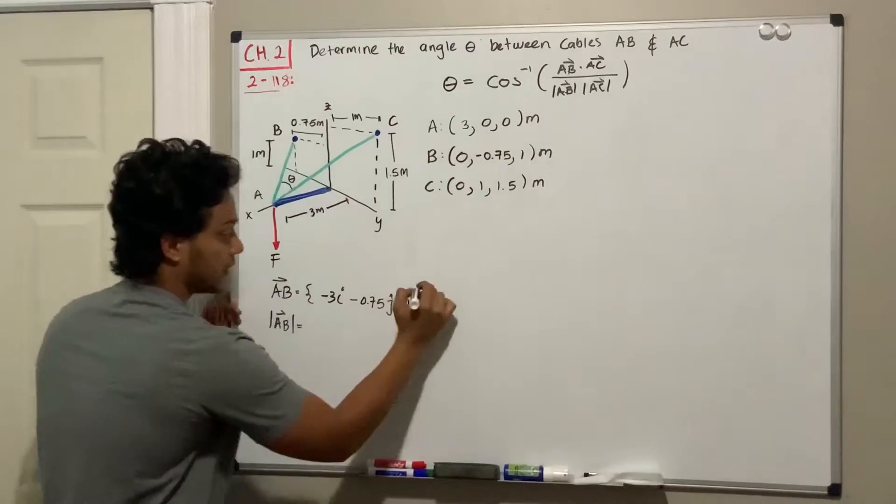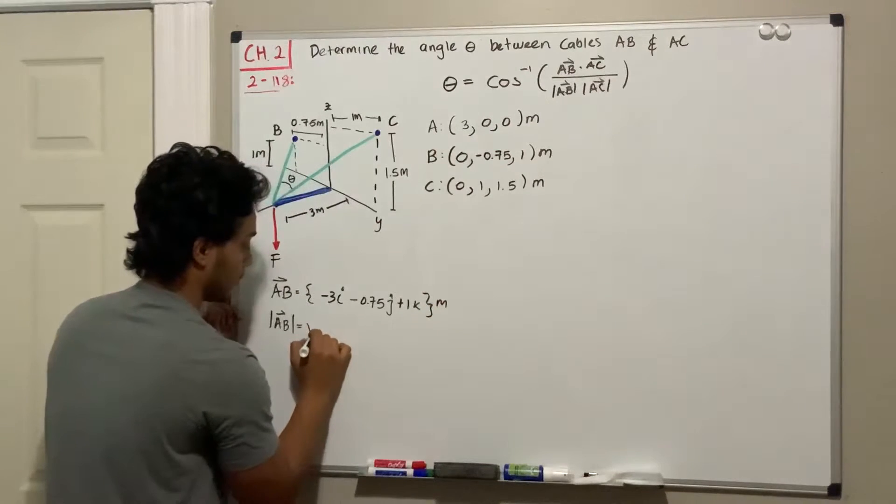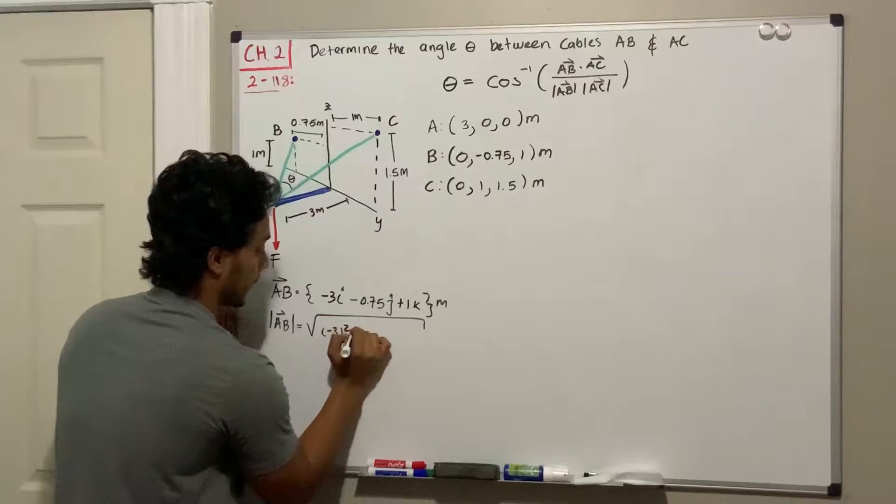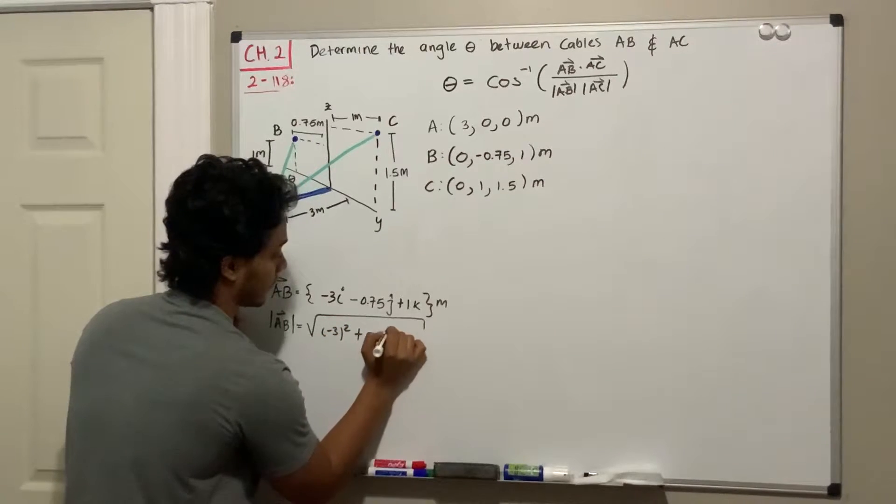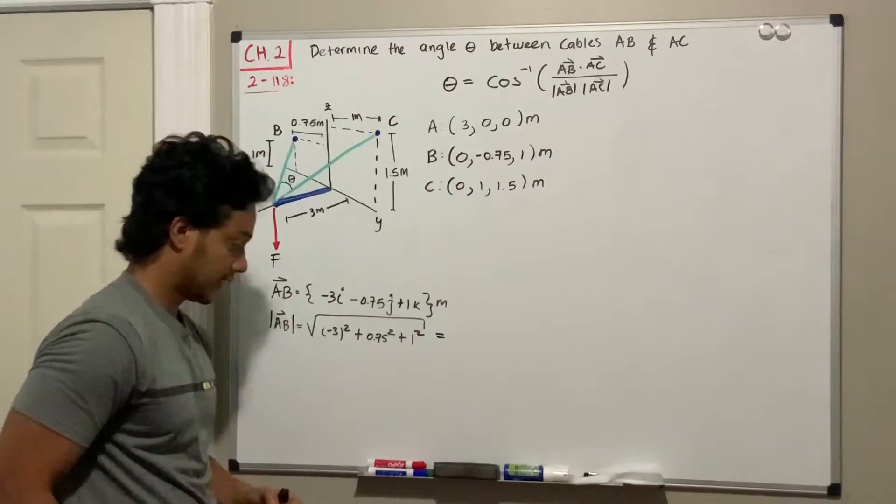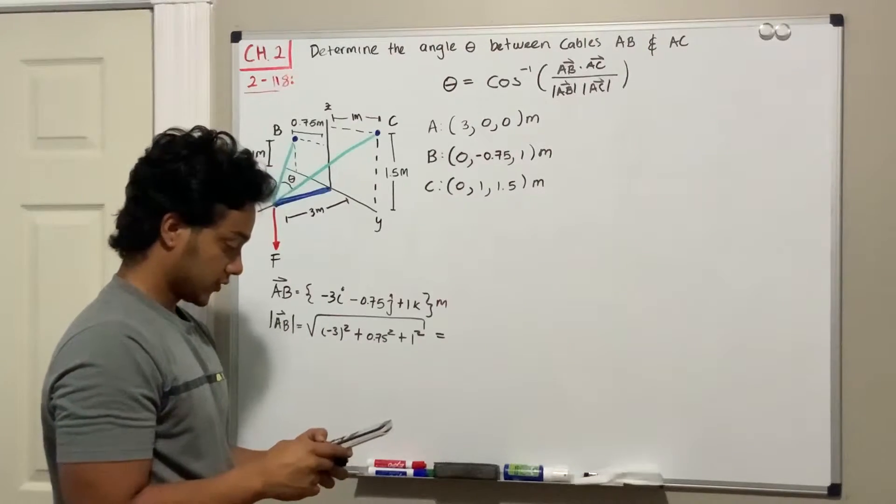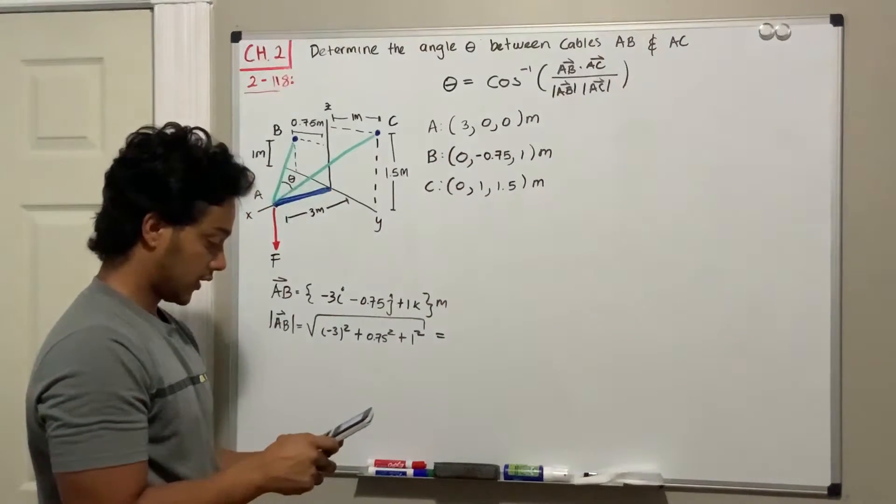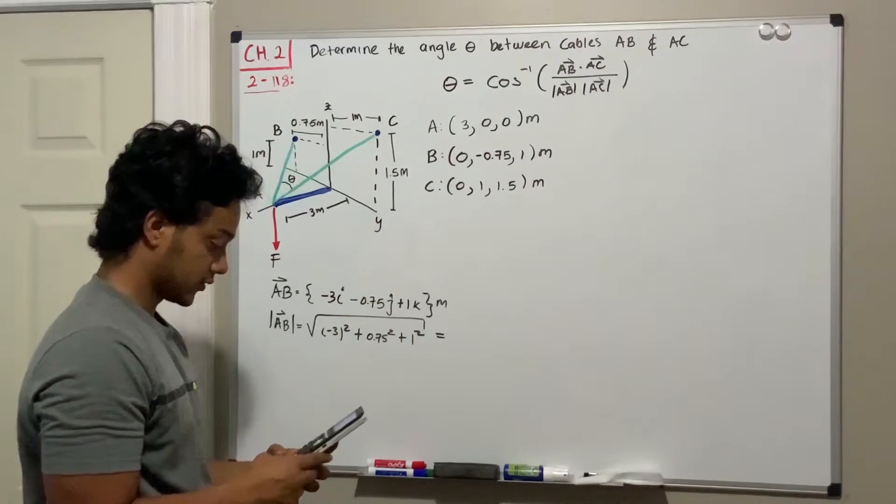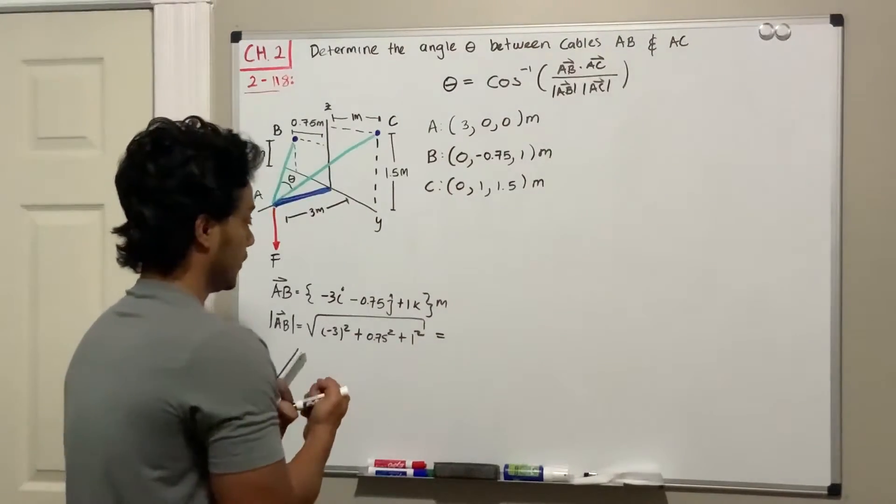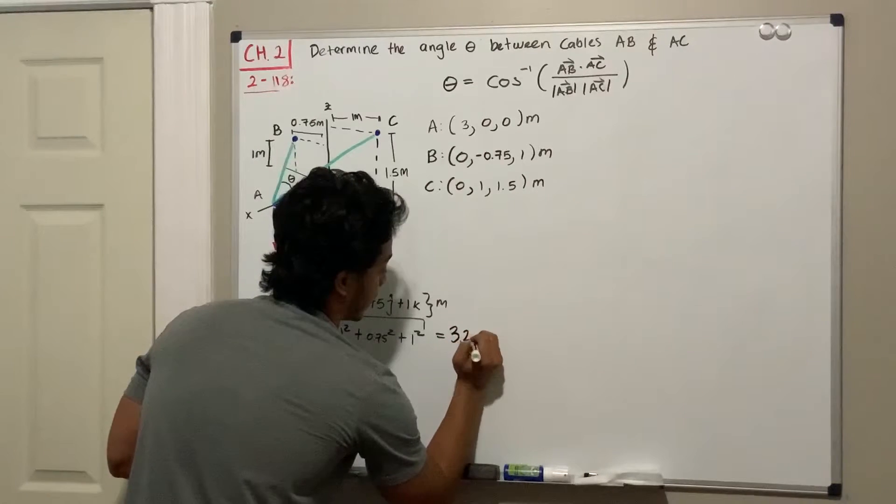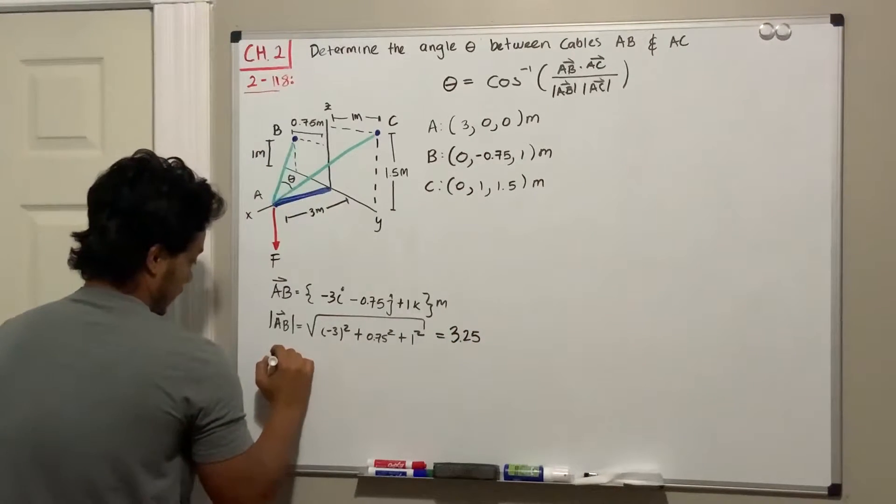with our calculator. We do the square root of negative 3 squared plus 0.75 squared plus 1 squared. If we check with our calculator, the square root of 3 squared plus 0.75 squared plus 1 squared is equal to 3.25. Let's do